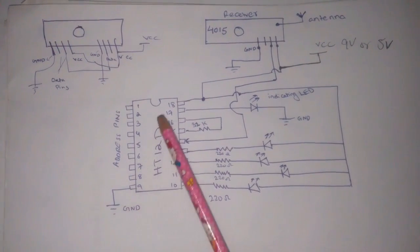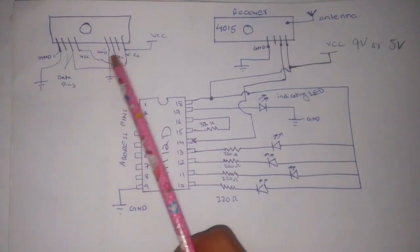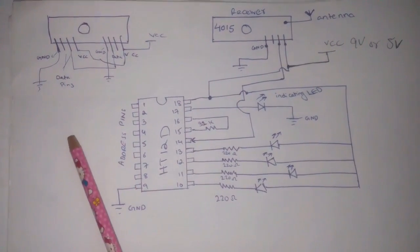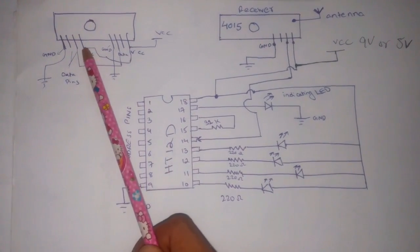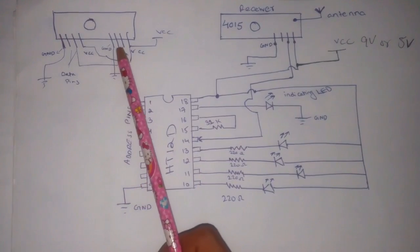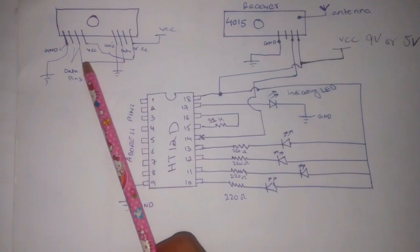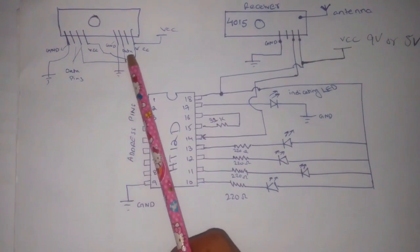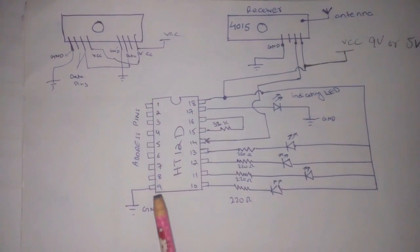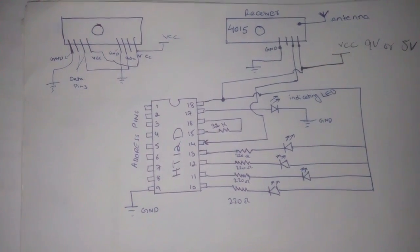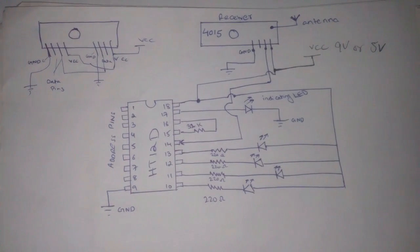This is the 8-pin receiver module. There is no difference between the 4-pin module and the 8-pin module — we just connect the VCC pin to VCC pin, the ground pin to ground pin, and the data pin to data pin. Both are the same, so don't worry about that. Thanks for watching. Please like, share, and subscribe to our channel for more electronics project videos.